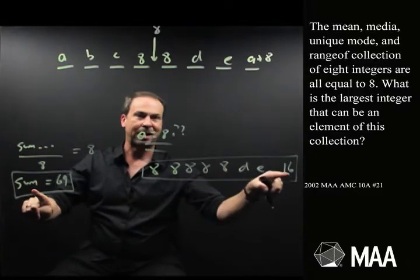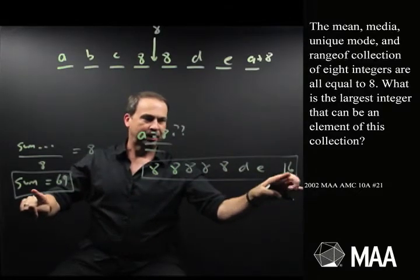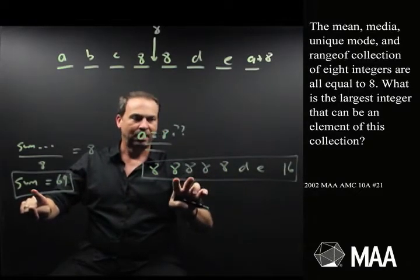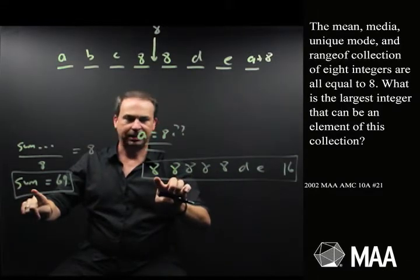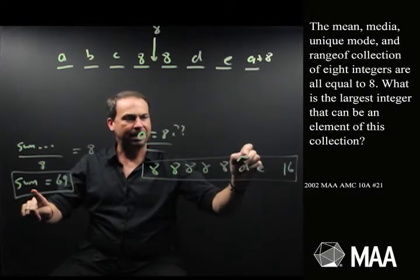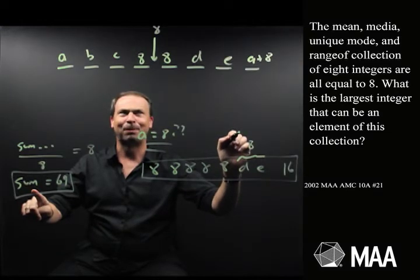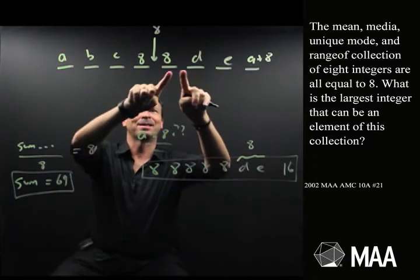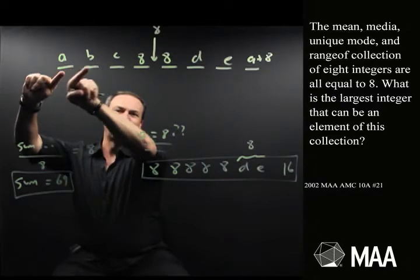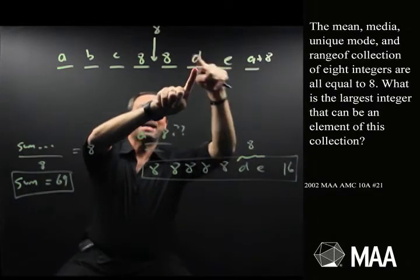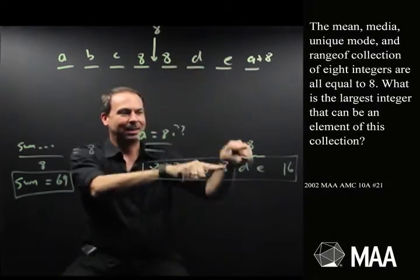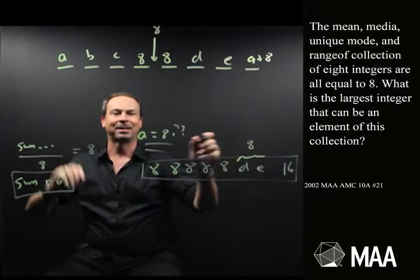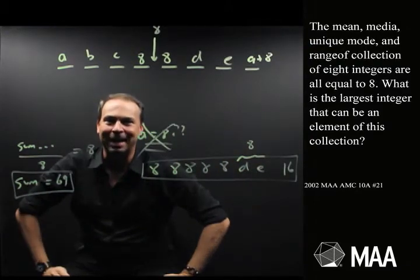All these numbers have to add up to 64. 16 plus 16 is 32, 48, that's 56. So these guys together have to add up to 8, which seems problematic. Remember this is an increasing sequence here. D and E, each number is bigger than 8, yet they sum to 8. That's not possible. A can't be 8.